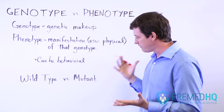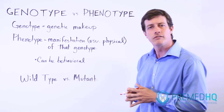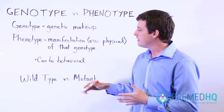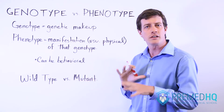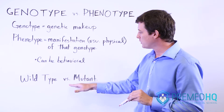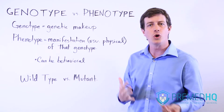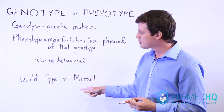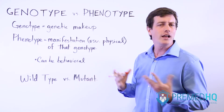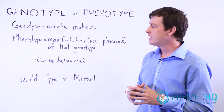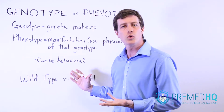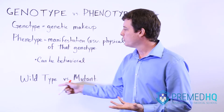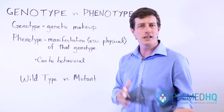Genotypes and phenotypes are often expressed in terms of wild type and mutant, because the mutant ones are often of interest when studying genetics — they're the ones that alter homeostasis or are readily observable and more easily isolated. Wild type is simply a term for what you would see in the wild — the typical thing you would encounter for that trait with that organism.